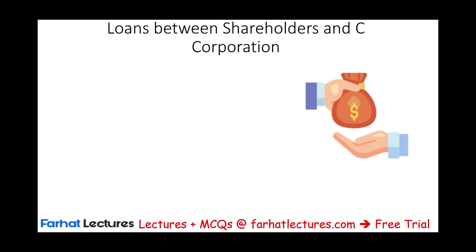Hello and welcome to the session in which we will discuss loans between shareholders and C Corporation. Just to remind you, a C Corporation is its own separate legal entity — separate from the shareholders, separate from the employees. So if the company needs money, they can borrow money from a bank, from another individual, from employees, or from the shareholders.